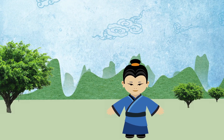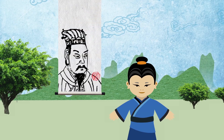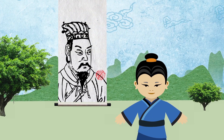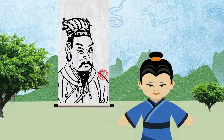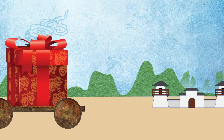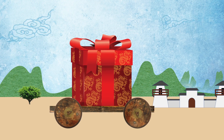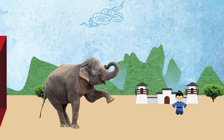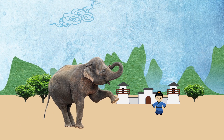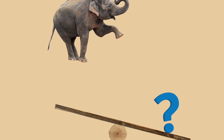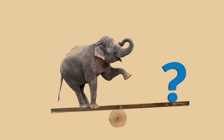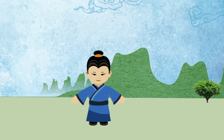Perhaps you've heard the story of Chow Chow, son of Chow Chow, a warlord during the late Han dynasty. On one occasion, Chow's father received a gift in the form of an elephant. Father Chow Chow wished to know the animal's weight.